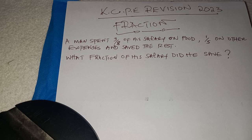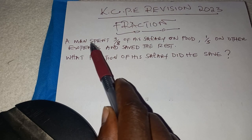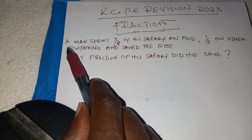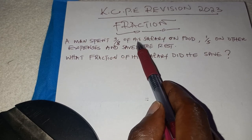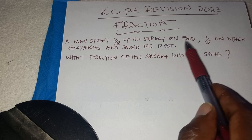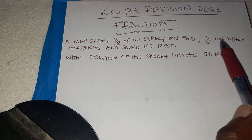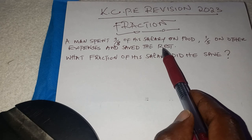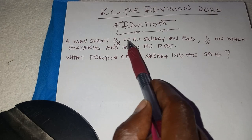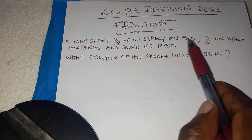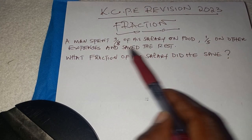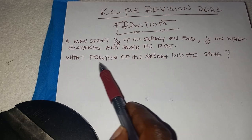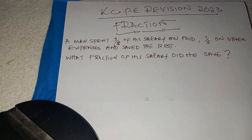The question says: A man spent 3 over 8 of his salary on food, 1 over 5 on other expenses and saved the rest. What fraction of his salary did he save?